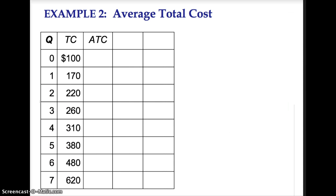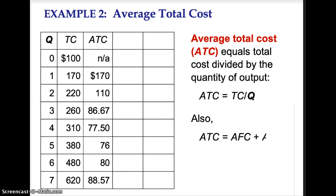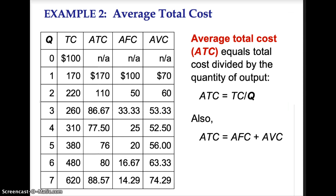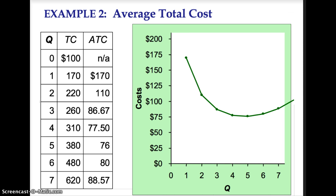Average total cost, or ATC, equals total cost divided by quantity of output. ATC equals TC divided by Q, or average total cost equals the sum of average fixed cost and average variable cost. I suggest pausing the lecture and calculating average total cost. On a diagram, the average total cost curve starts at $170, decreases to $76, and then increases up to $88.57.